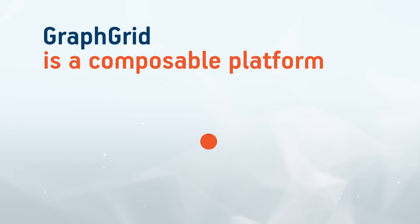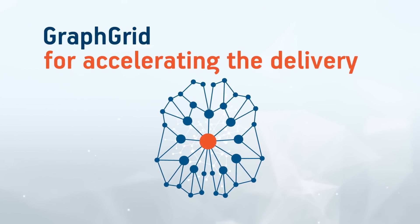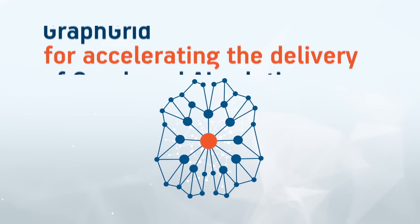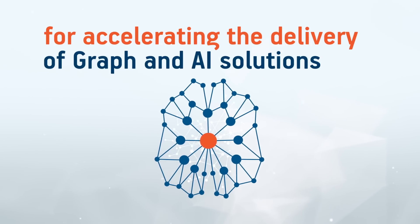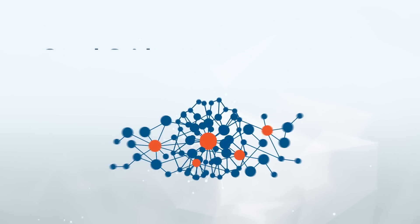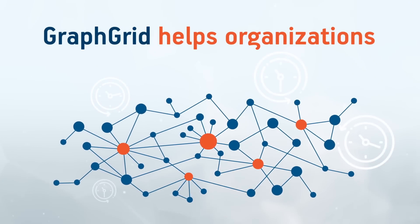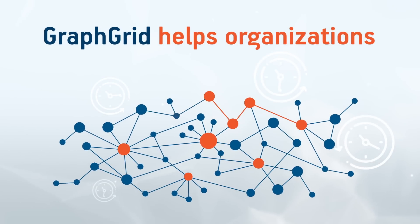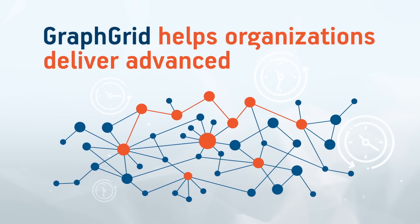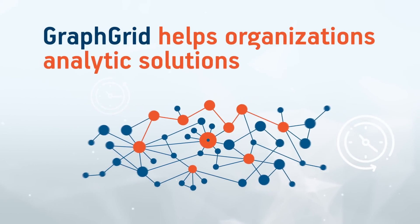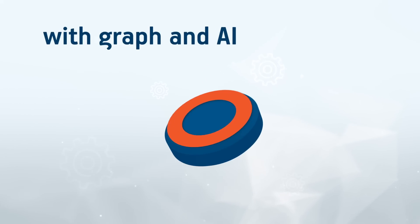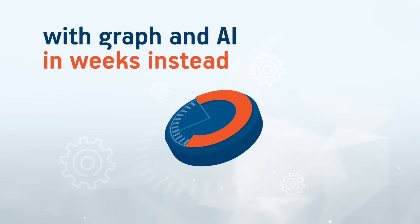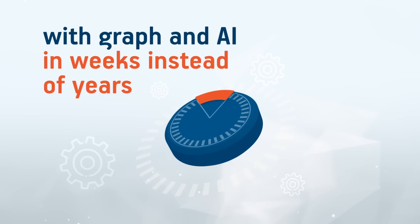GraphGrid is a composable platform for accelerating the delivery of graph and AI solutions. GraphGrid helps organizations deliver advanced analytic solutions with graph and AI in weeks instead of years.